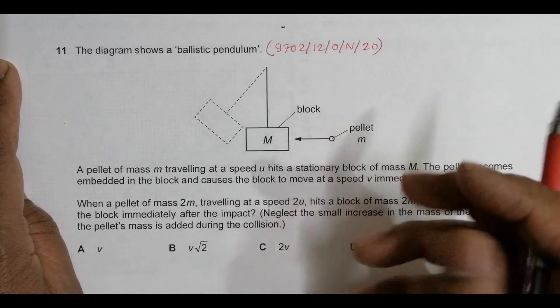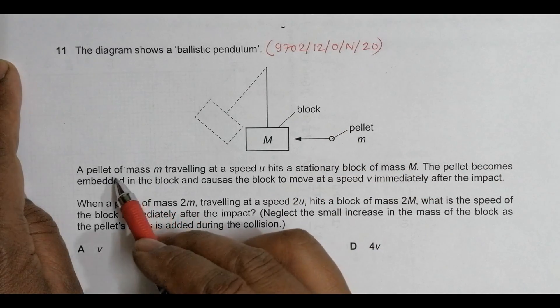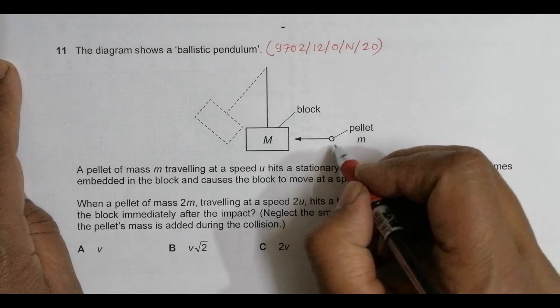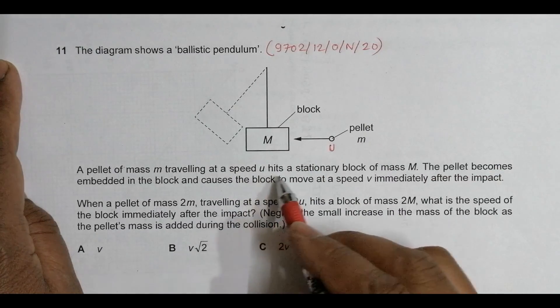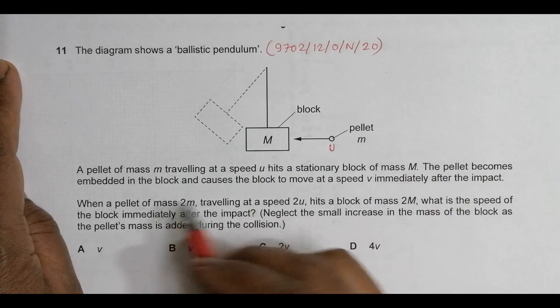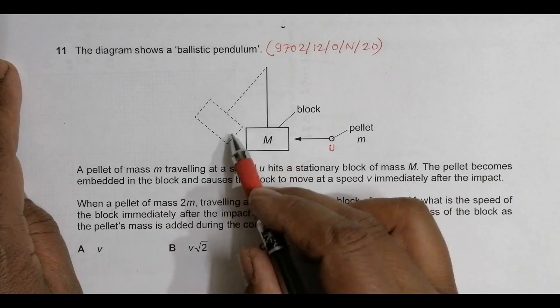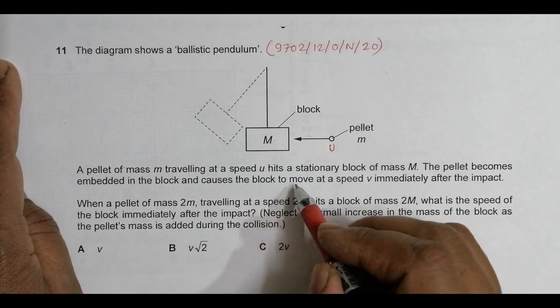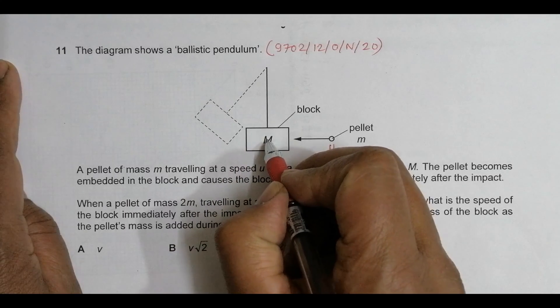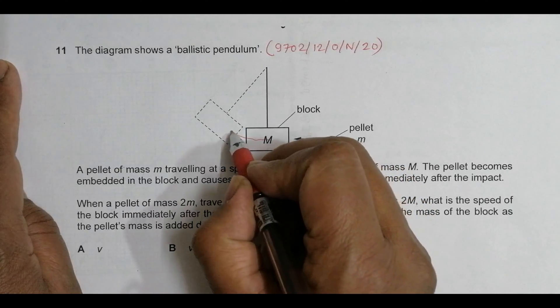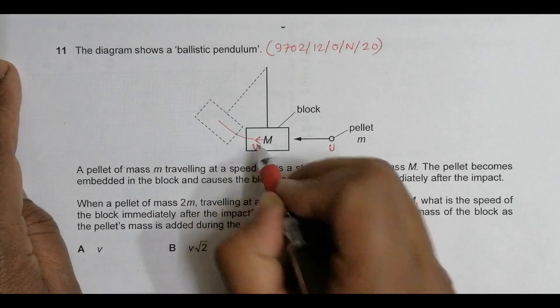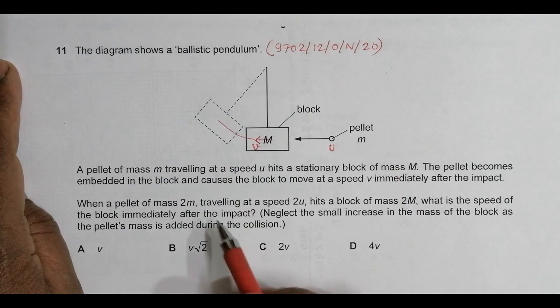We have a pellet of mass m traveling at speed u that hits a stationary block of mass M. The pellet becomes embedded in the block and causes it to move at speed V immediately after the impact.